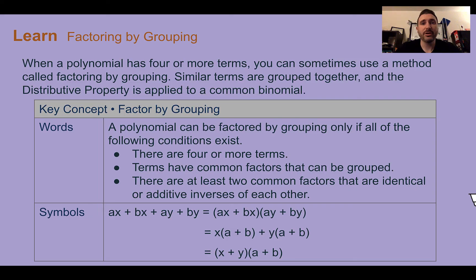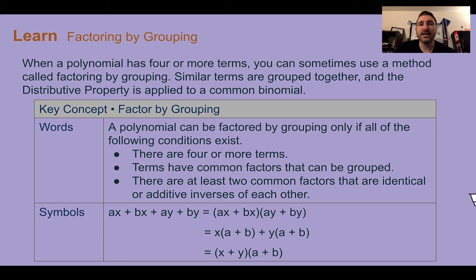Let's learn: factoring by grouping. When a polynomial has four or more terms, you can sometimes use a method called grouping to factor. Similar terms are grouped together, then the distributive property is applied to binomials that have things in common. We can factor by grouping only if: there are four or more terms, they have common factors that can be grouped, and there are at least two common factors that are identical or additive inverses.